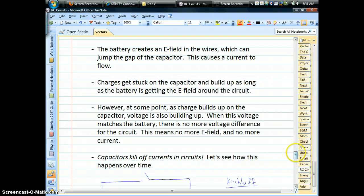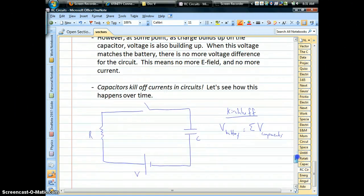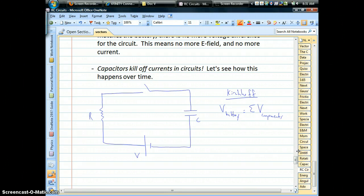As charge builds up on the capacitor, the current actually starts to decrease. The reason for that is through Kirchhoff's rule for series, where we had this voltage rule. The voltage of the battery always has to be equal to the sum of the voltage of the resistor plus the capacitor. So as the capacitor charges up, that means the voltage is building up on your capacitor. Since these always have to add up to the same number, the voltage across the resistor goes down, which means the current decreases.